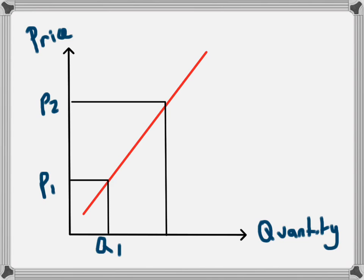With this supply curve, as the price increases from P1 to P2, the quantity supplied increases from Q1 to Q2. This is the basic relationship between price, quantity and supply. As the price increases, the quantity supplied increases, leading to an upward sloping supply curve.